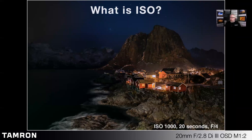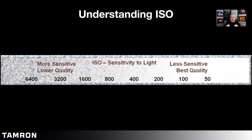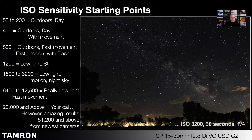Moving on, we go to ISO. What is ISO? It's simply your camera sensor's sensitivity to light. The lower the number, the less sensitive, but the better quality you're able to get — better sharpness, better color saturation — though you're going to use longer shutter speeds and larger apertures depending upon your subject matter.